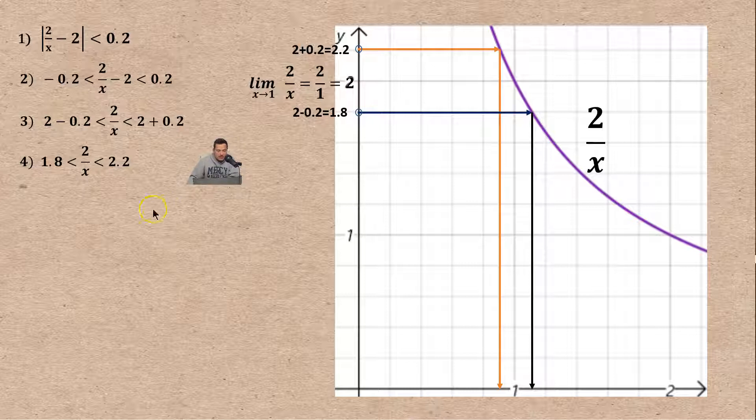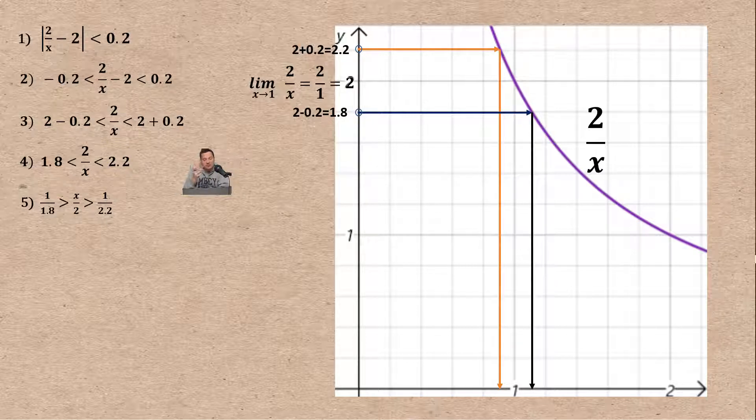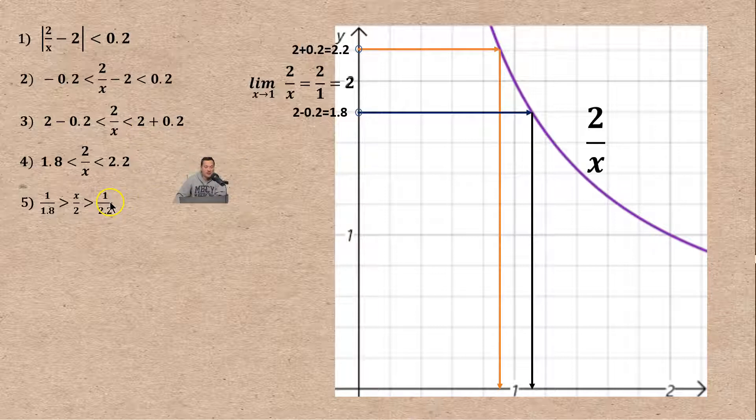First of all, I'm flipping the inequalities. So instead of writing 1.8, at 5 I wrote 1 over 1.8. 1.8 is really 1.8 over 1, so when you flip it it becomes 1 over 1.8. In the middle, 2 over x becomes x over 2. And 2.2 becomes 1 over 2.2. The only adjustment we make is that the direction of the inequality has to be switched at step number five.